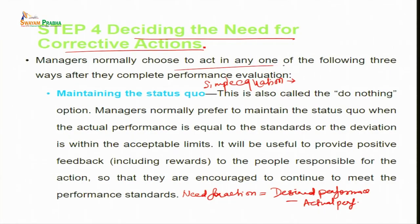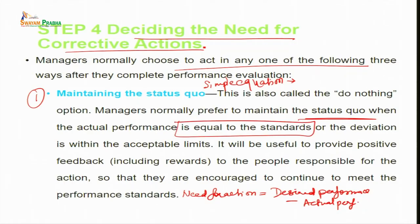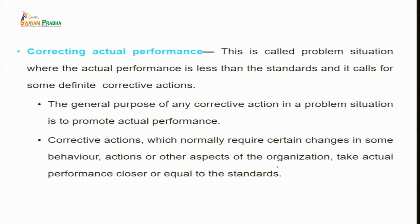The manager normally chooses to act in one of three ways after completing performance evaluation. The first is maintaining the status quo — this is called the do-nothing option. Managers normally prefer to maintain the status quo when actual performance is equal to the standards or the deviation is within the acceptable limit. It is useful to provide positive feedback including rewards to people responsible for those actions.